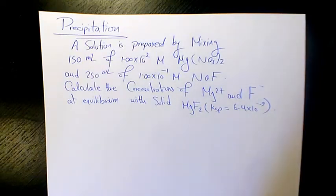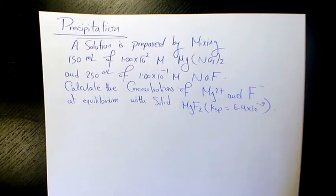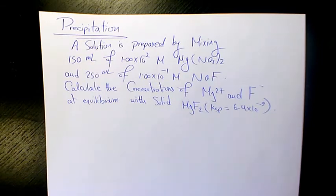What's up guys, this is Massey and welcome to another video. In this video I want to talk about precipitation. The question says: a solution is prepared by mixing 150 mL of 1.1×10⁻² M magnesium nitrate and 250 mL of 1×10⁻¹ M sodium fluoride. Calculate the concentration of magnesium ions and fluoride ions at equilibrium with solid MgF₂. Ksp equals 6.4×10⁻⁹.